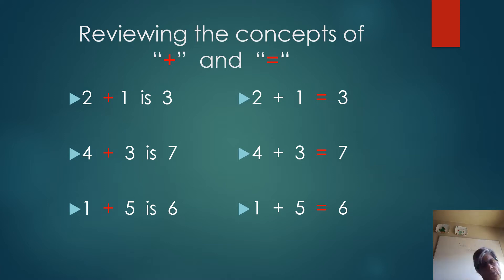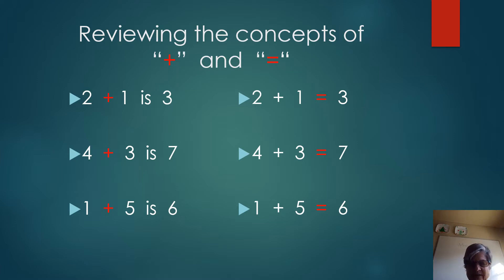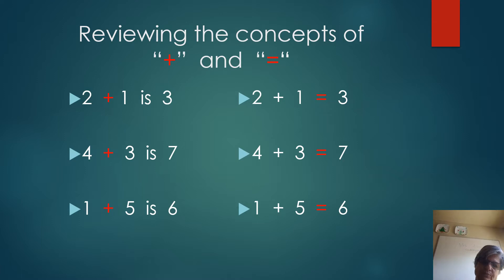Now let's go underneath it, and we see four plus three is seven. See the plus symbol again? It's in red. Let's go to the third problem. It says one plus five is six. Again, look at the plus symbol — it's in red again.